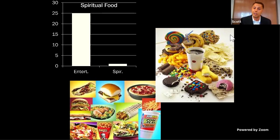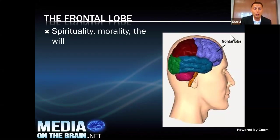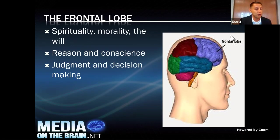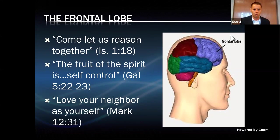The Bible says, 'Be not conformed to this world, but be transformed by the renewing of your mind.' Our lifestyle in light of the Three Angels' Message should be totally different from the world's. The frontal lobe of the brain houses spirituality, morality, the exercise of the will, reasoning, conscience, sound judgment, decision-making, prayer and worship, discerning spiritual truth, empathy, and altruism — pretty much the whole Christian life.